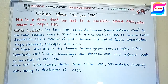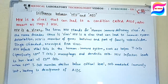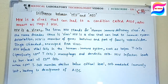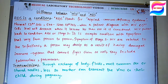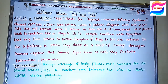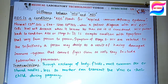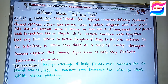HIV is a virus that can lead to a condition called AIDS. If a person is diagnosed with HIV, it is not necessary that they have AIDS — it takes time to develop the condition of AIDS. AIDS stands for Acquired Immunodeficiency Syndrome, meaning it involves a syndrome with multiple signs, symptoms, and infections that are related to each other.